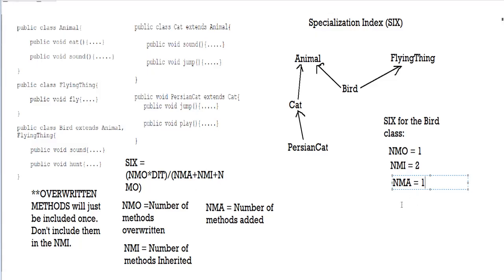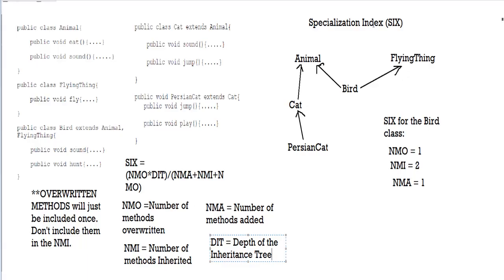Finally, we have the easiest one — DIT, which means Depth of the Inheritance Tree. For the bird class, the depth of the inheritance tree is equal to 1, because there is only one arrow separating bird from the main parent class. If we did this for the Persian cat class, you'll see that there are two arrows separating it from animal, so it would be 1 plus 1, which means 2. But for the bird class, there's only one arrow, which means DIT equals 1. Now we have all of our values: NMO, NMI, NMA, and DIT.